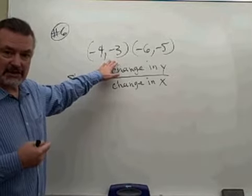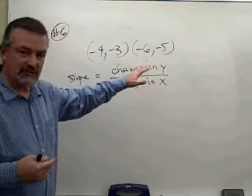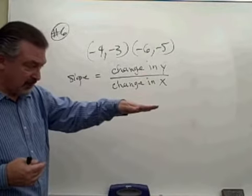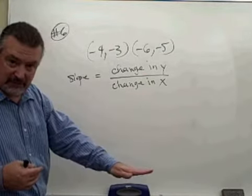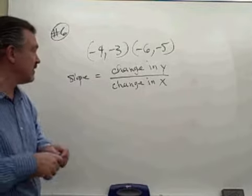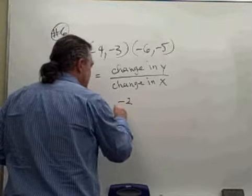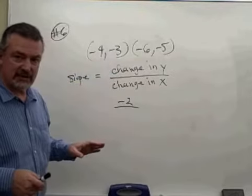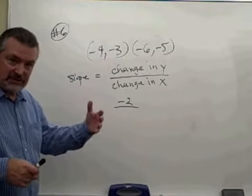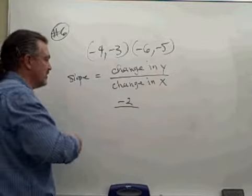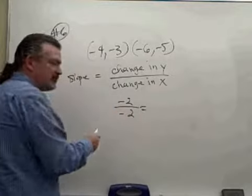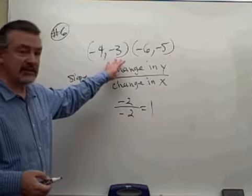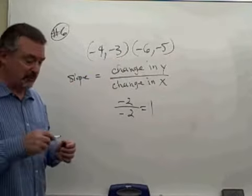The Y value here is negative 3, and the Y value here is negative 5. Going from negative 3 to negative 5, that's a decrease of 2 — just like going from 3 below zero to 5 below zero in temperature is a decrease of 2 degrees. So the change in Y is negative 2. At the same time, X went from negative 4 to negative 6, also a decrease of 2. Negative 2 over negative 2 is a slope of positive 1. The line through those two points has a slope of positive 1.